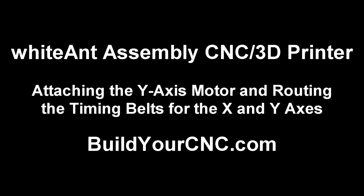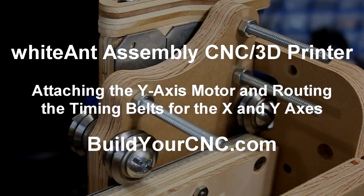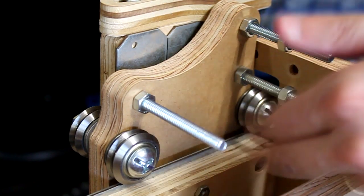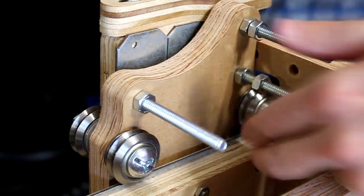Getting back to the ZY plate, we will add the Y-axis motor mount and motor. Add three nuts onto the three screws that will be used to fasten the motor mount.